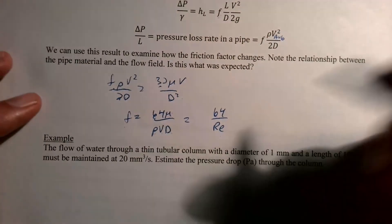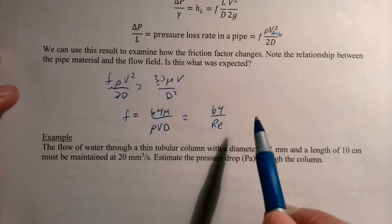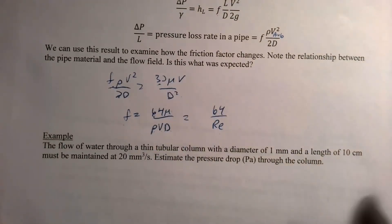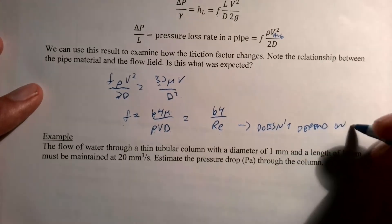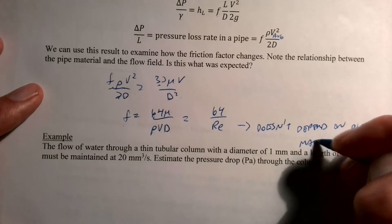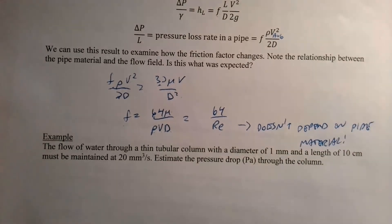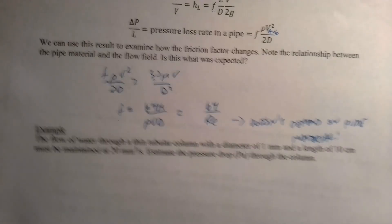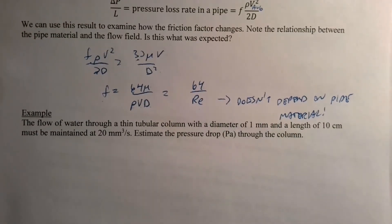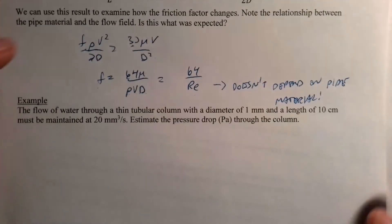One important observation: notice that f = 64/Re does not depend on pipe material at all. For laminar flow, energy dissipation occurs between the fluid particles, not at the wall, so the type of pipe doesn't matter. That's not the case for turbulent flow, which is next.